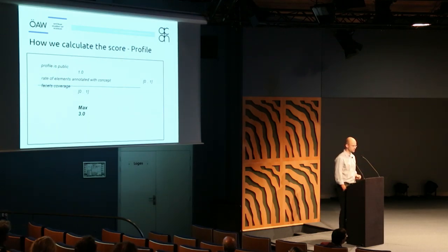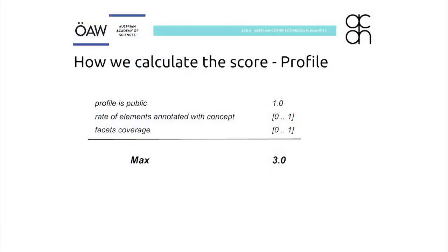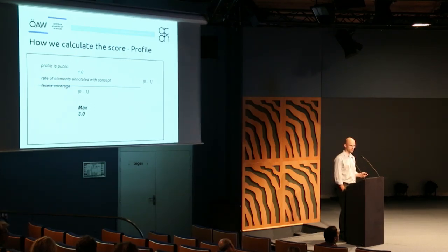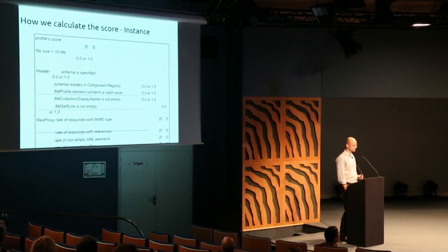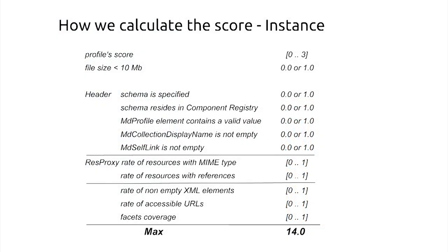How do we compute the score? What are the criteria? For the profile, we basically have just three criteria: is the profile public, how many elements are annotated with concepts, and the facet coverage. They are all normalized to one, so altogether you can get a score of three. For the instances — the CMDI records — you can get an overall score of 14. Three come from the underlying profile. Then there are criteria on file size, whether there is complete information in the CMDI header such as a reference to the MD profile and whether the MD self-link is present.